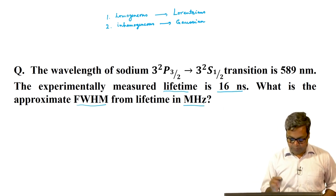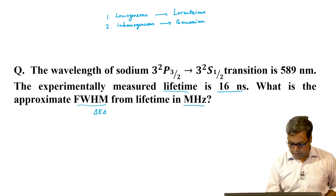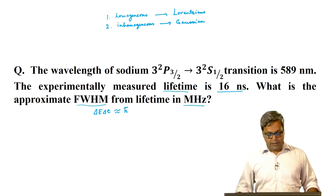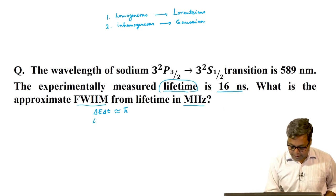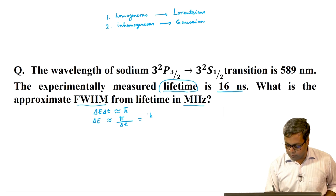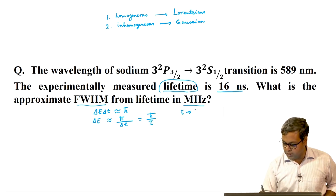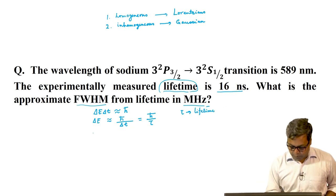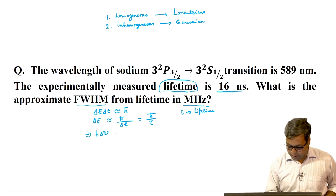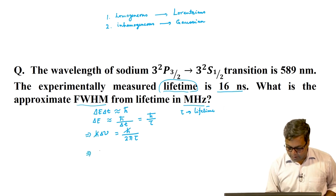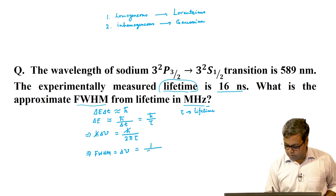From Heisenberg's uncertainty principle we can write delta E times delta T is approximately h-cross. Delta T can be thought of as the time that the molecule survives in the excited state, that is the lifetime. So we can write delta E approximately equals h-cross divided by delta T, or h-cross divided by tau, where tau is the lifetime. We can write delta E as h times delta nu, and that equals h divided by 2 pi tau. Cancelling h, the full width at half maximum is given by delta nu equals 1 divided by 2 pi tau.